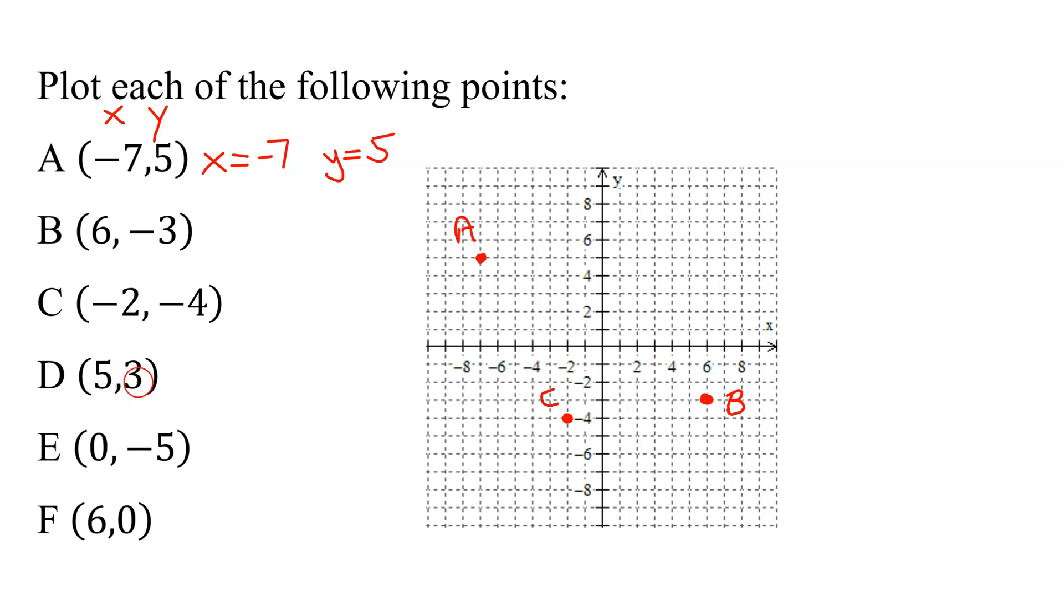Moving on, D is 5, 3, so x is 5. Here's the origin. 5 to the right, and then 3 up.